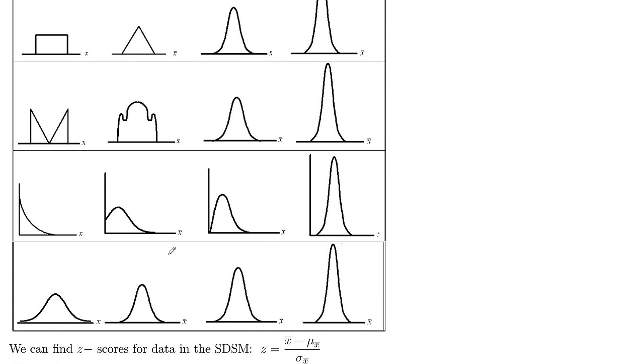So if you start with a normal distribution down here, samples of size 2 are going to be normal, size 5 and size 30, they're all normal. So you start with something normal, you're normal right away.